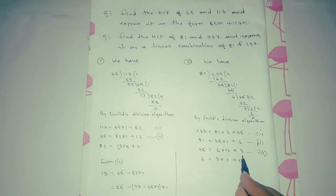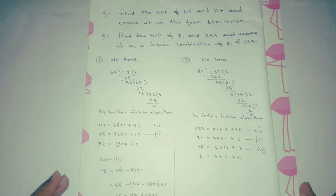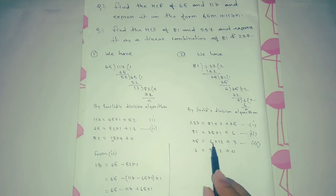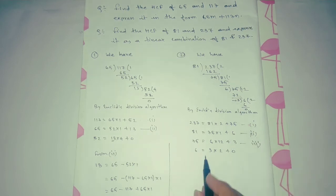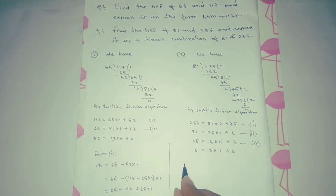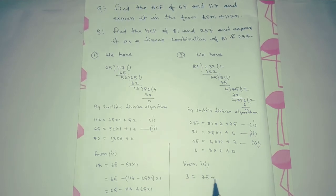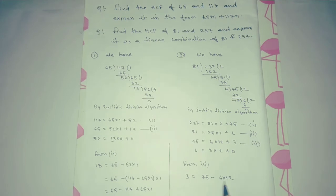For the second problem, the HCF of 81 and 237 is 3. From equation three, we write: 3 = 75 − 6 × 12. We keep 13 aside and note this is from equation three.